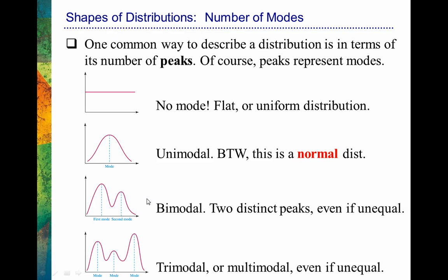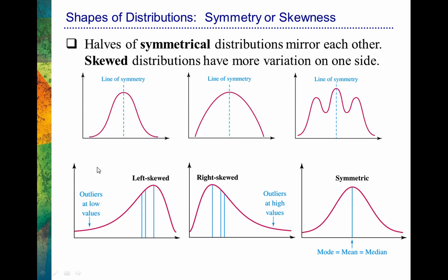We also want to be able to look at the distribution of our data, describe it, and understand what the graph means. We can describe it in terms of the number of modes — whether it's unimodal, bimodal, or trimodal. We often tend to see normally distributed data that would be unimodal. We also describe the shape of our distribution in terms of skewness or symmetry. That normal distribution we focus so much on is symmetrical. However, we sometimes run into distributions that are skewed, so we should understand how to define those distributions — whether they're left or right skewed — and understand how it affects our data.